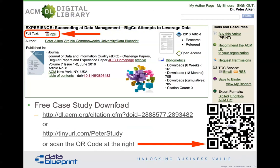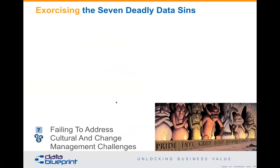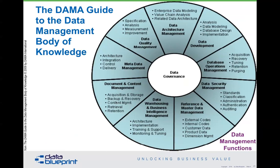The next deadly sin has to do with understanding sequencing. Sequencing in a data strategy context is very, very important. One of the main mantras we use at Data Blueprint is: buy technology last. I know that sounds terrible, but unless you have the other things correct, it isn't going to make any sense.